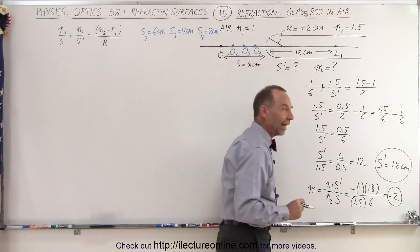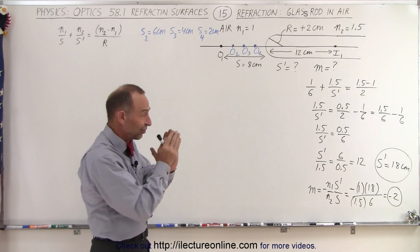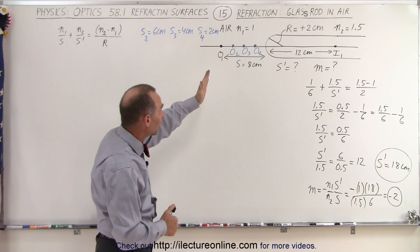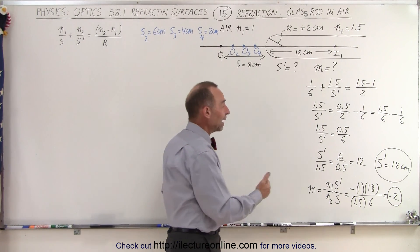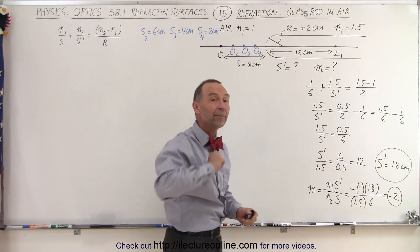So notice that negative 1 was just kind of a fluke because we had put the object in just that right position. Here, when we move the object a little bit closer to 6 centimeters instead of 8 centimeters, the magnification now is a minus 2. The negative simply means that it's upside down.